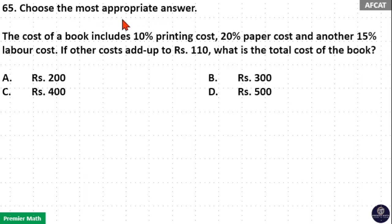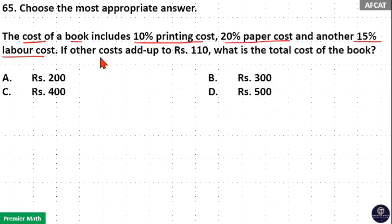Choose the most appropriate answer. The cost of a book includes 10 percentage printing cost, 20 percentage paper cost, and another 15 percentage labor cost. If other costs add up to rupees 110, what is the total cost of the book?